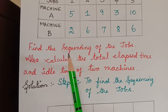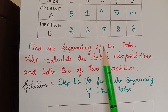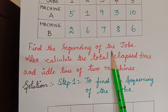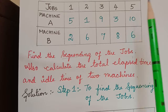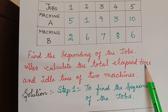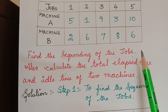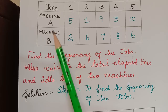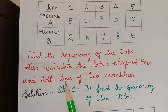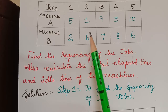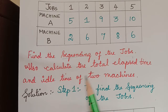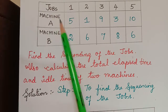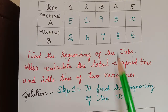They are asking us to find the processing order — the sequence in which the machines have to complete the jobs, that is, which job has to be performed first. The total elapsed time is the time taken for completing all the jobs by all the machines. Idle time is the time in which a machine does not have a job — it stays idle. We have to find the idle time of machine A and machine B, as well as the total elapsed time.